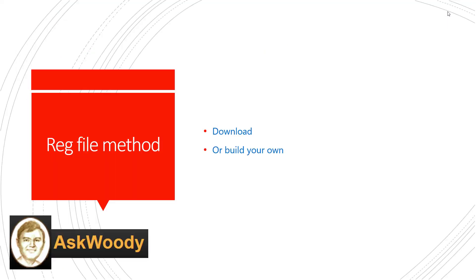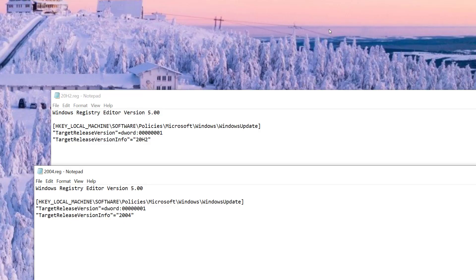The next version is finding someplace online that has built a registry file that you click and install in your system. What you do is find someplace reputable, because you don't want to download from any old willy-nilly site. Hopefully they posted what's inside the file so you can look at it. You click on it and it inserts it into your computer. These are called registry keys, and the file extension is .reg. When you open them up in Notepad, which I highly recommend you do before you install them, you can look and see the structure, and it always starts out with Windows Registry Editor.